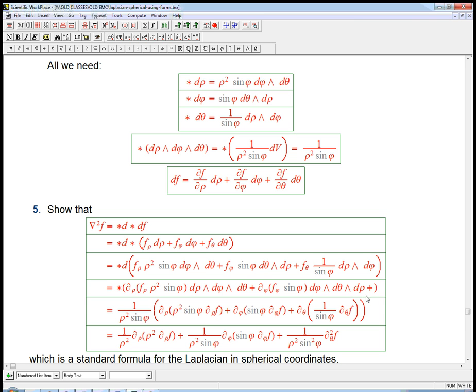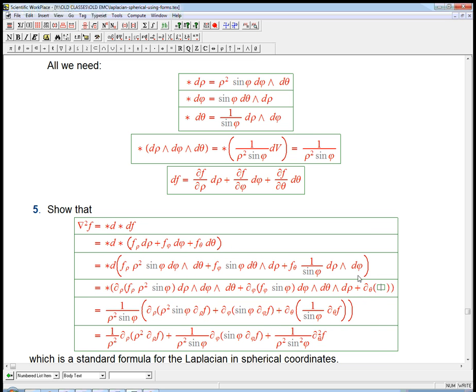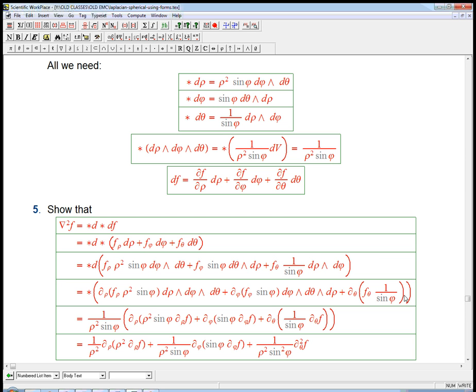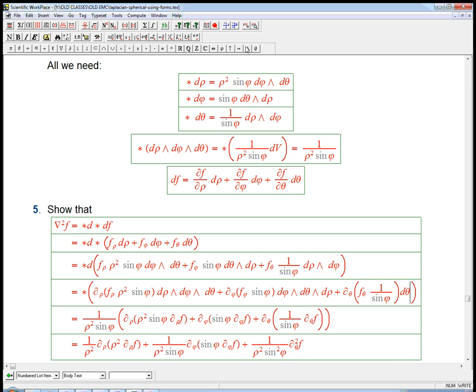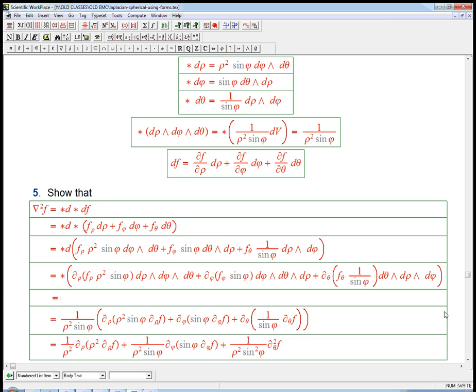And we'll worry about the signs and maybe flipping these orders in a second, but it's actually going to come out very nicely. Plus, and now we're going to do the same deal. Here the only thing that's going to live is a D theta, so that's going to be the partial with respect to theta of this guy, then times D theta wedged into what's already there. Now notice we've got rho, phi, theta, and if we look cyclic order, rho, phi, theta, rho, phi, theta. They're actually all the same. So we get plus signs everywhere. Not too shocking, because this is supposed to be like a Laplacian, supposed to be like the divergence of the gradient. It really shouldn't give us minus signs, and that's what's happening with these particular forms in this particular dimension.